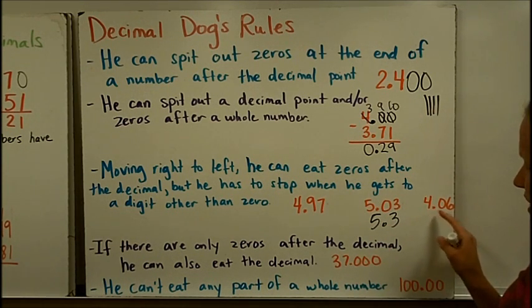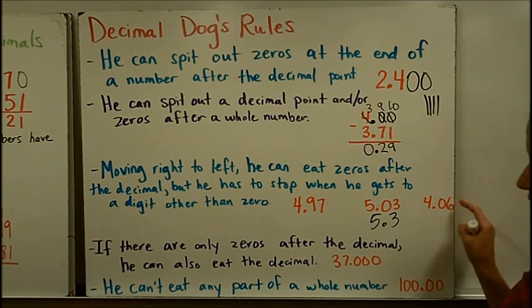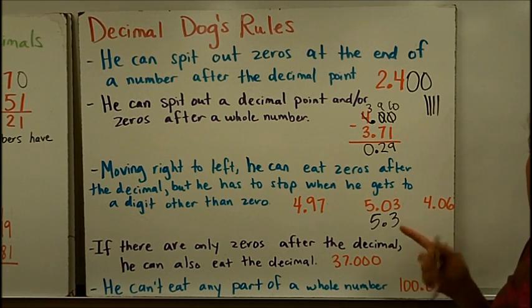Decimal dog is blocked by any numbers other than zero from going any further. Here's another example, 4.06. He can't eat this zero because he hits this six before he ever gets there. So this number is as simple as it could be.